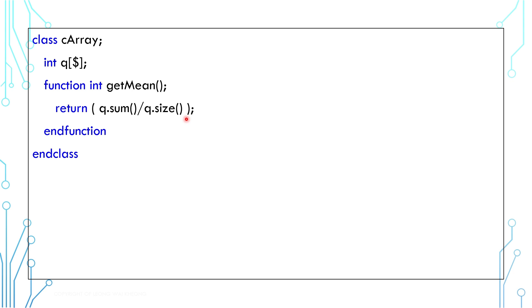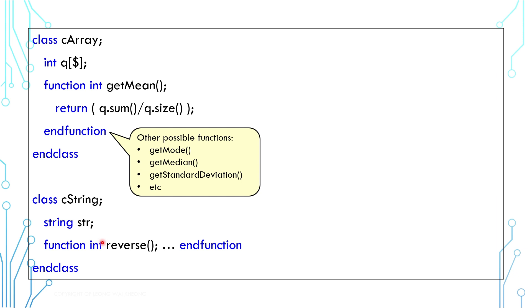We can also include other variables or functions. For example, getMode, getMedian, or getStandardDeviation. In a similar manner, we can create a CString class and introduce the reverse function, but we'll skip the detail this time.